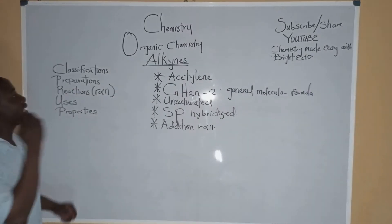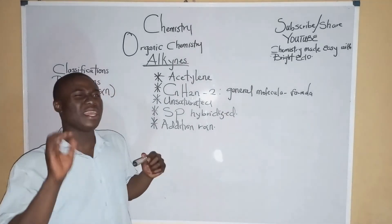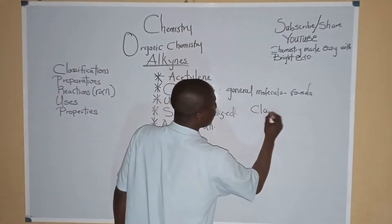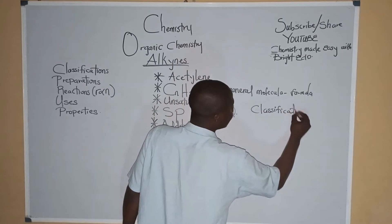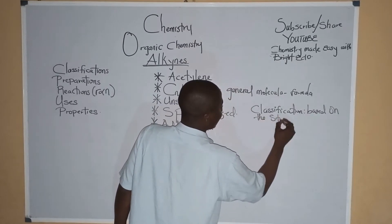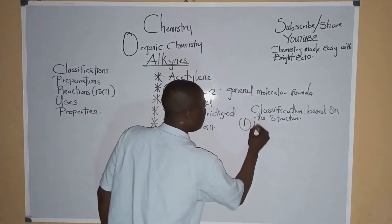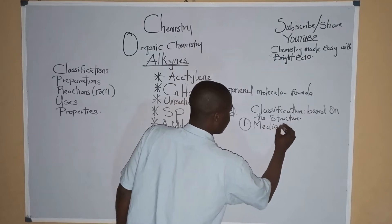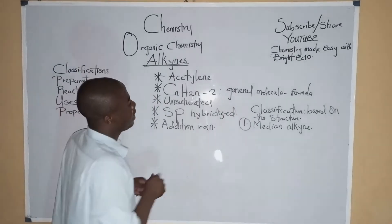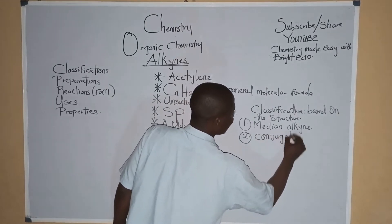Now, let's talk about the classification of alkynes. Alkynes are classified based on their structure. The first classification is the median alkynes. We also have the conjugated alkynes.